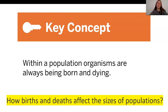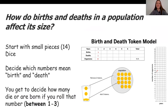We're going to start collecting evidence today by thinking about births and deaths. We saw last time that within a population, organisms are always being born so populations grow, but also organisms are always dying, which causes populations to decrease. We're going to look at how births and deaths can affect the size of populations by playing a little game, which I recommend playing by yourself, with a family member, or a friend you can message.